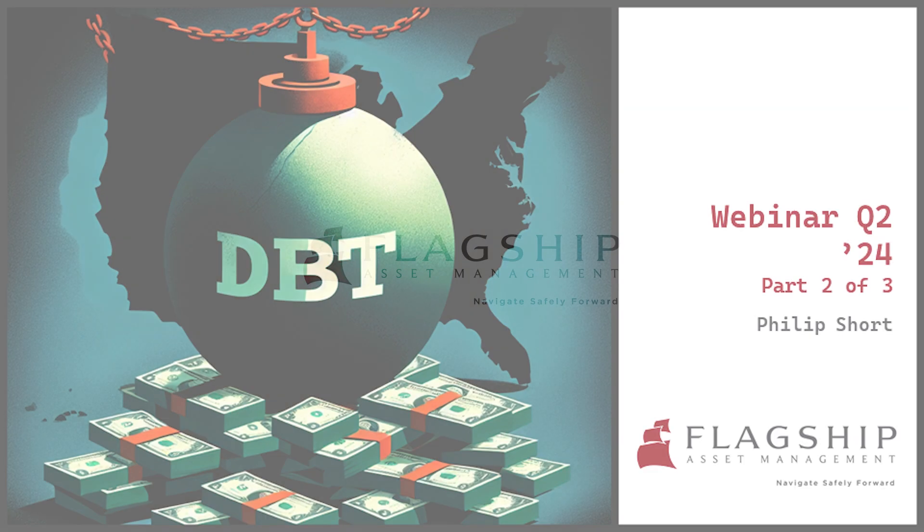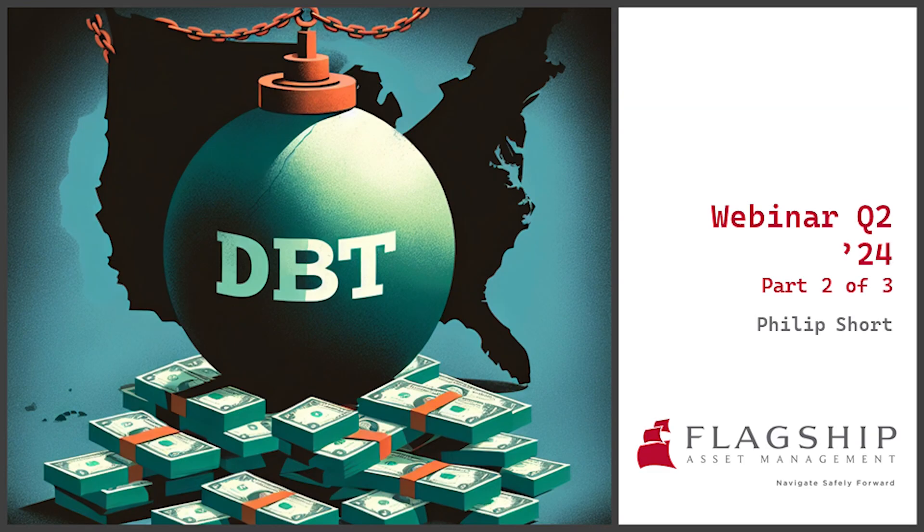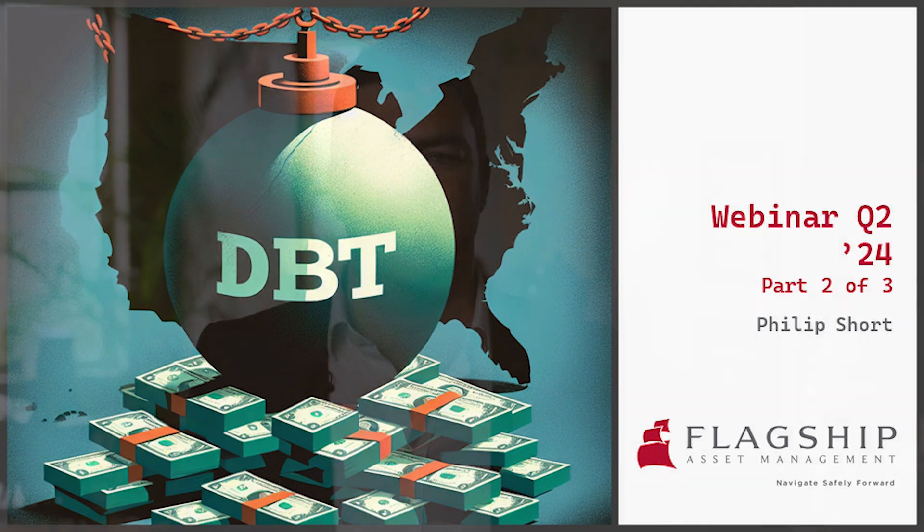Welcome back. In part two we're going to talk about how the U.S. got here — this massive 35 trillion dollars of debt — the three choices that the U.S. has, and the very three different effects it will have on your portfolio depending on what choice the U.S. makes.